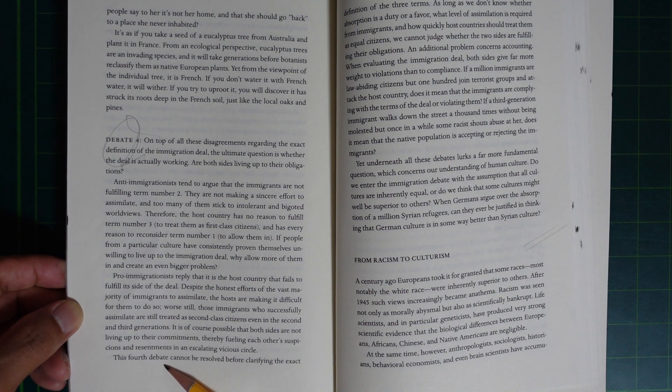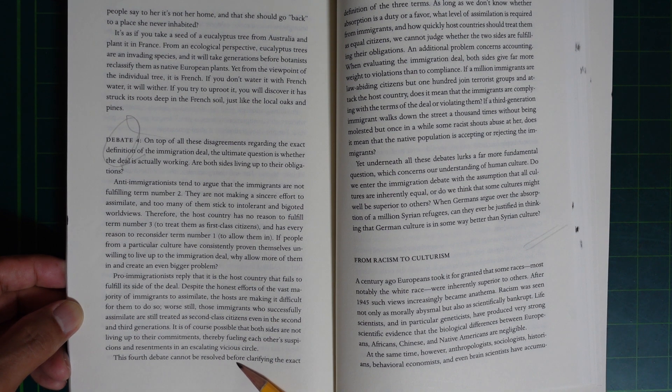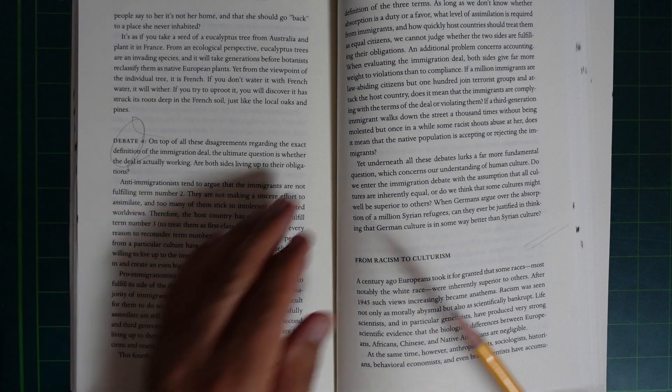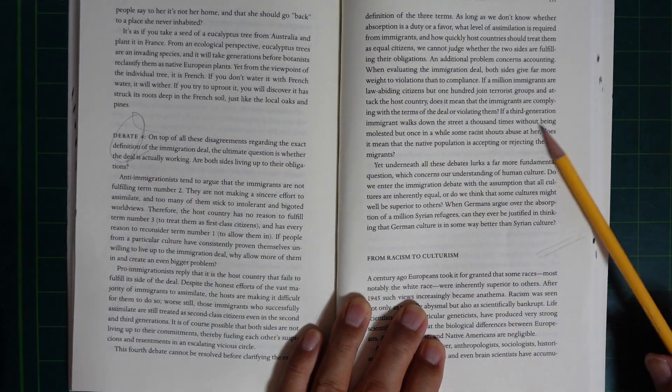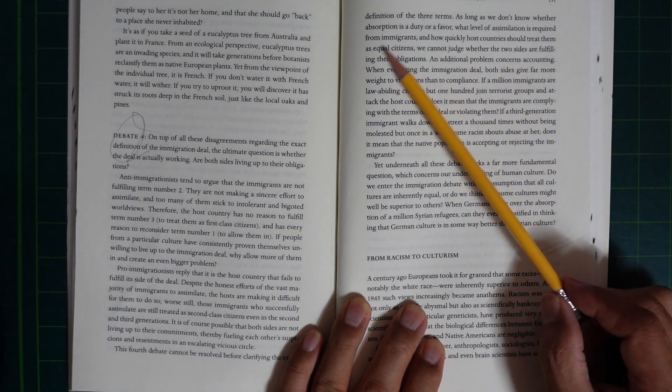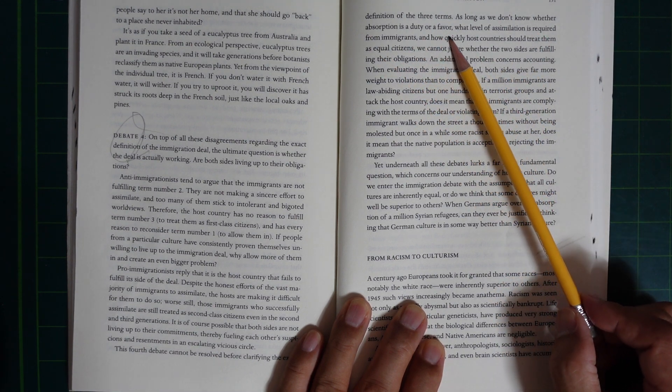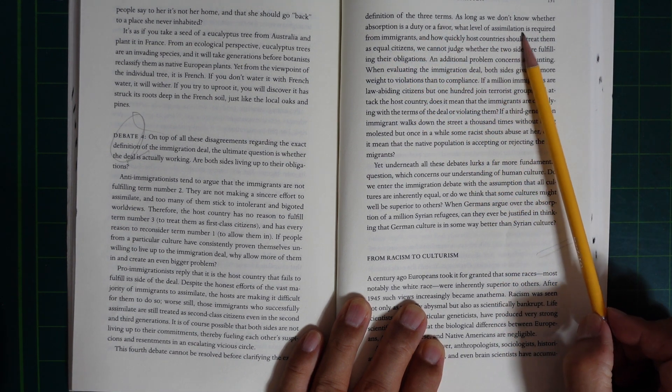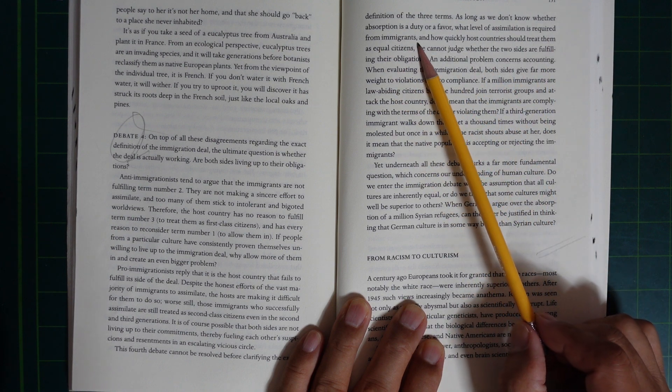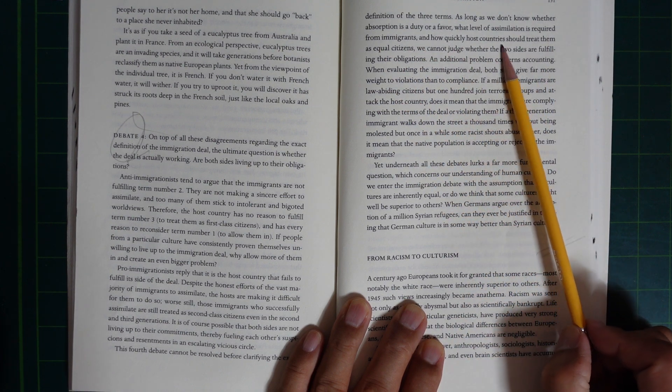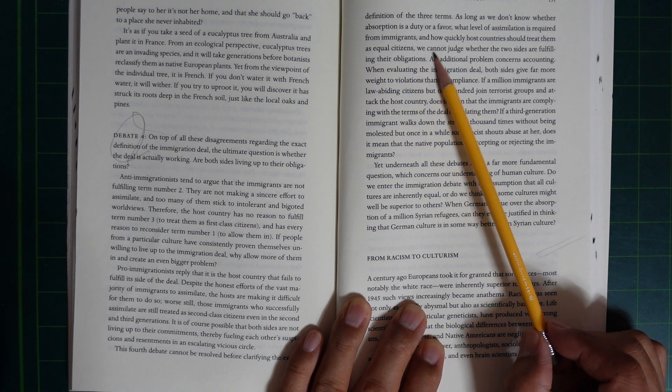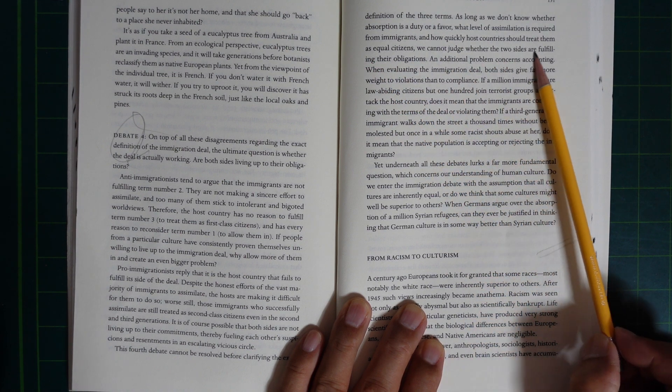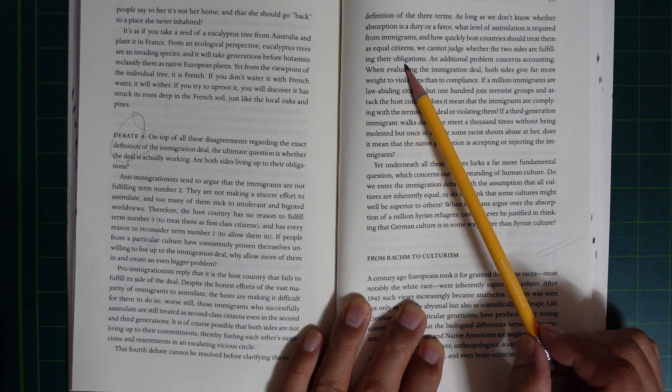The fourth debate cannot be resolved before clarifying the exact definition of the three terms. As long as we don't know whether absorption is a duty or a favor, what level of assimilation is required from immigrants, and how quickly host countries should treat them as equal citizens, we cannot judge whether the two sides are fulfilling their obligations.